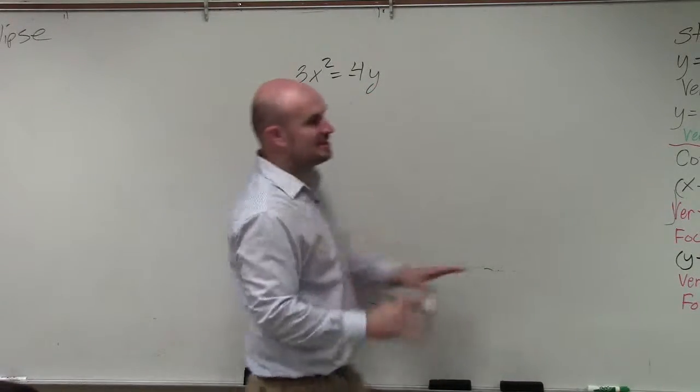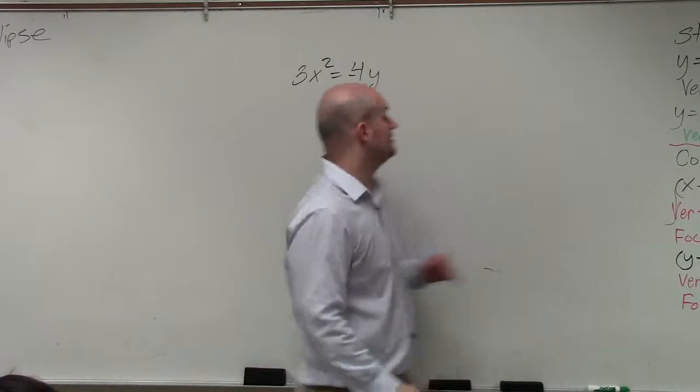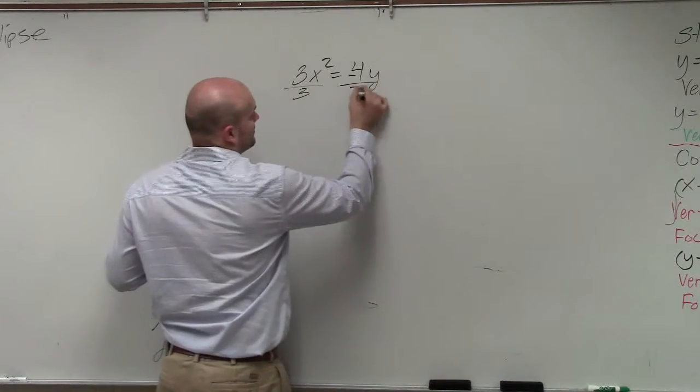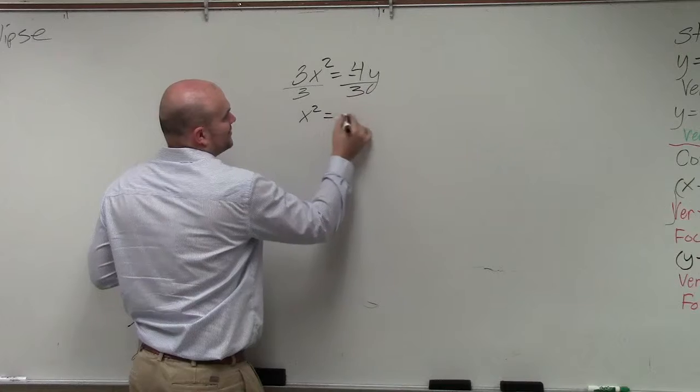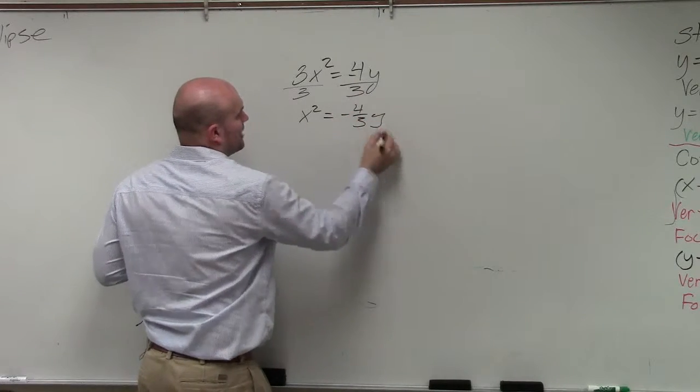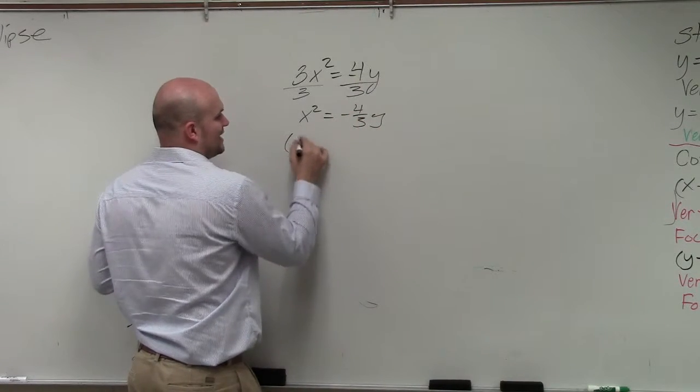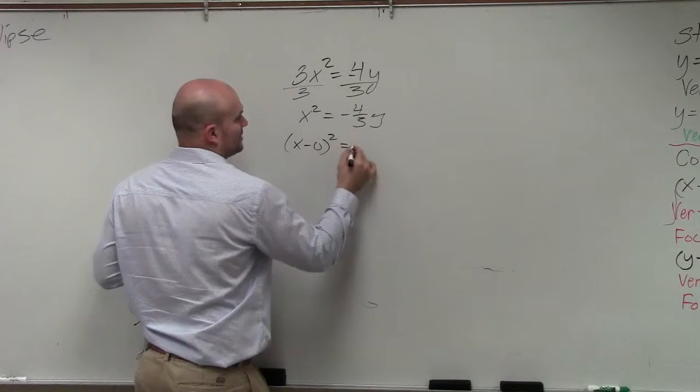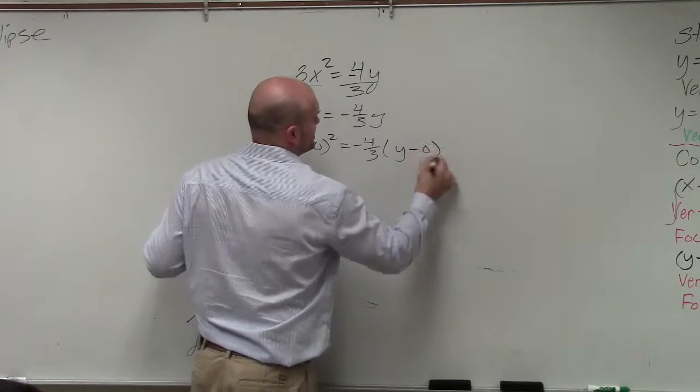First of all, the other thing is I noticed that my x squared is isolated. So what I'll do is I'm going to divide by 3 here. So therefore I have x squared equals negative 4 thirds y. Now I can rewrite it as x minus 0 squared equals negative 4 thirds y minus 0.